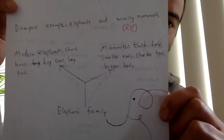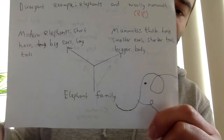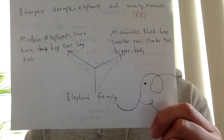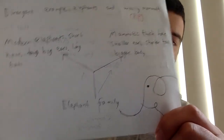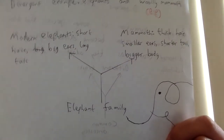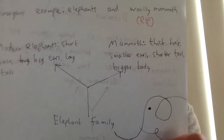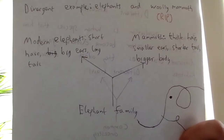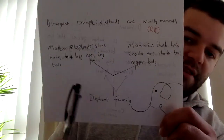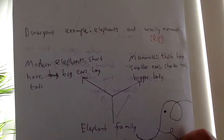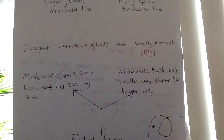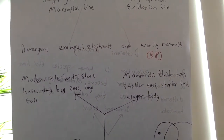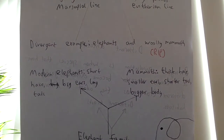A good example of divergent evolution would be elephants and woolly mammoths. They both come from the elephant family, but over time the living elephants we know today have very large ears, reduced body hair, and a long tail — all of which help them adapt to life in very warm lands. Having big ears allows them to cool down easily, and reduced fur means they don't trap as much heat. Whereas woolly mammoths, even though they're no longer with us, had really thick hair and much smaller ears compared to modern day elephants. That's divergent evolution — they come from a common background but adapted to become more different over time.